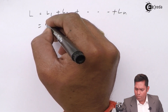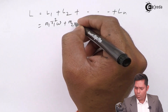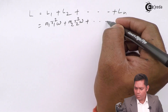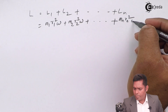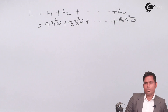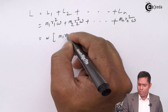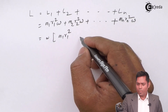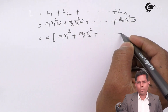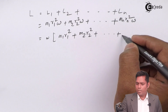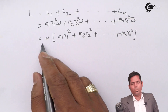Substituting the values: L equals M1 R1 squared omega plus M2 R2 squared omega, and so on up to Mn Rn squared omega. Taking omega as common factor gives: L equals omega times the quantity M1 R1 squared plus M2 R2 squared plus up to Mn Rn squared.